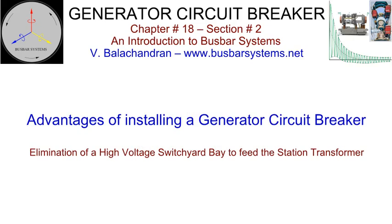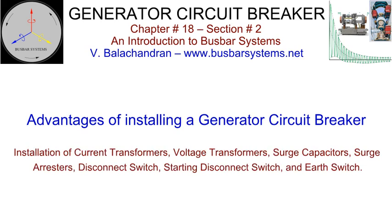There are several advantages of installing a generator circuit breaker. It may be economical to install a generator circuit breaker than to have an additional switch yard bay with a startup transformer and associated high-voltage and medium-voltage switchgear. It is possible to install several electrical accessories on either side of the generator circuit breaker for metering, protection, and control, such as current transformers, voltage transformers, surge arresters, surge capacitors, starting disconnect switch, and shorting and earthing switches. These accessories will form an integral part of a generator circuit breaker in a common housing.